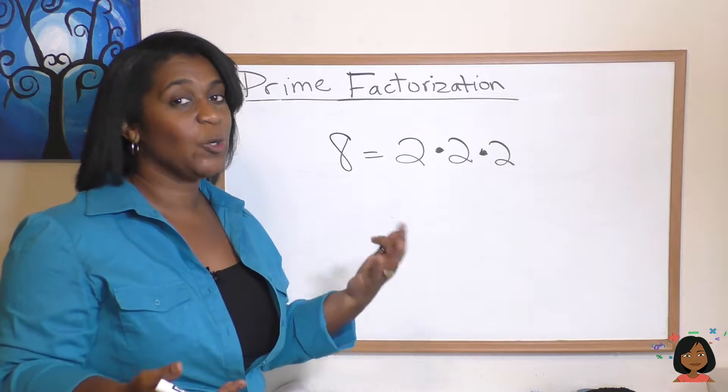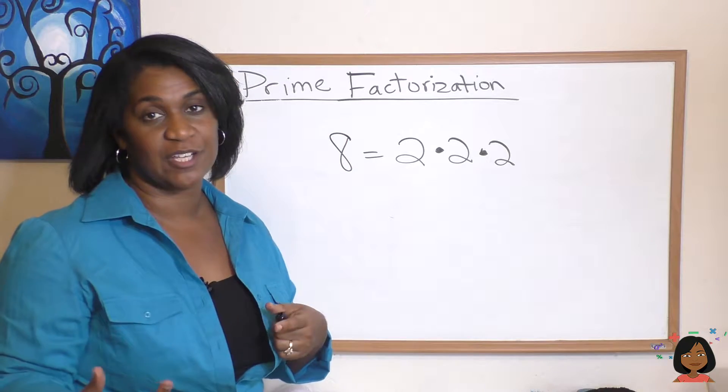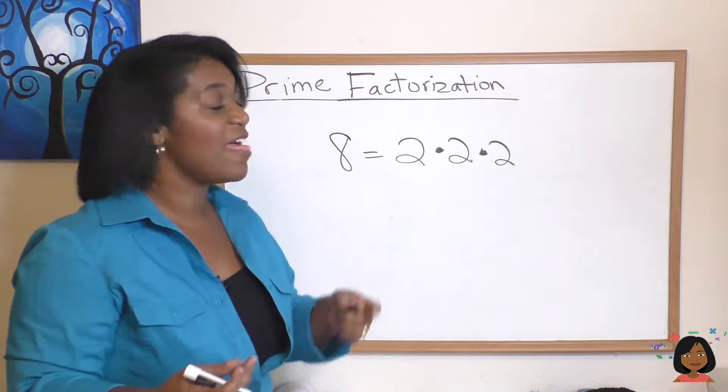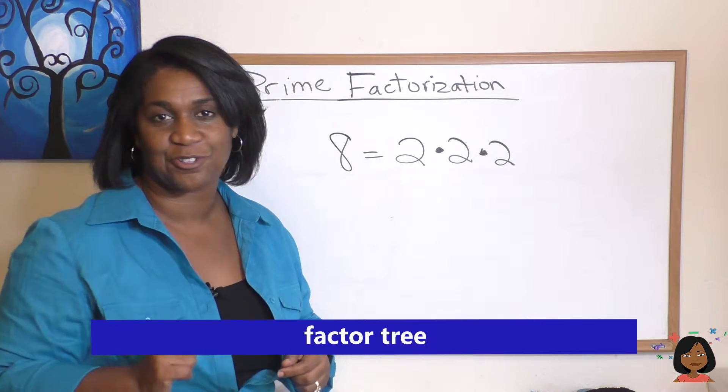We can do this with bigger numbers, and to do it with bigger numbers we can use one of two methods to find the prime factorization, meaning find the prime numbers that make up our number. So let me show you the first one. It's called a factor tree.